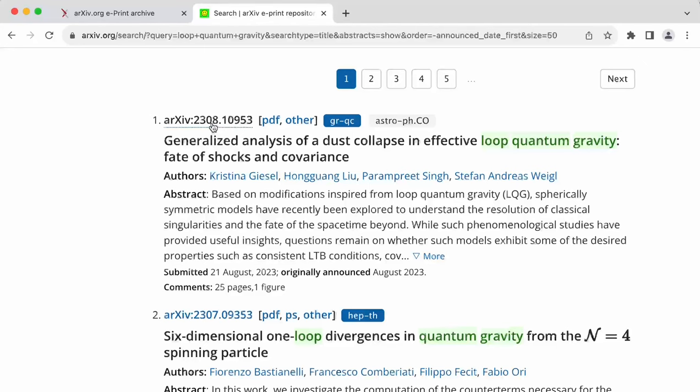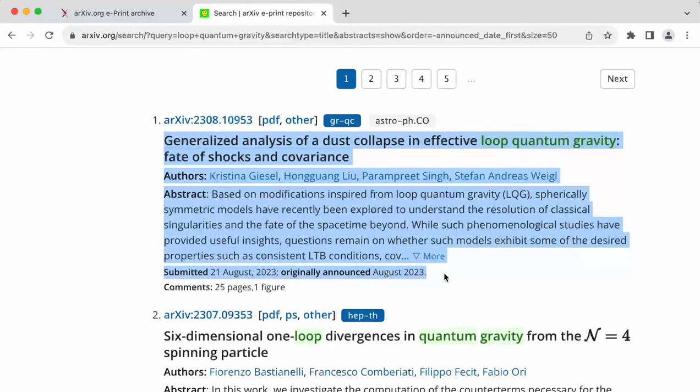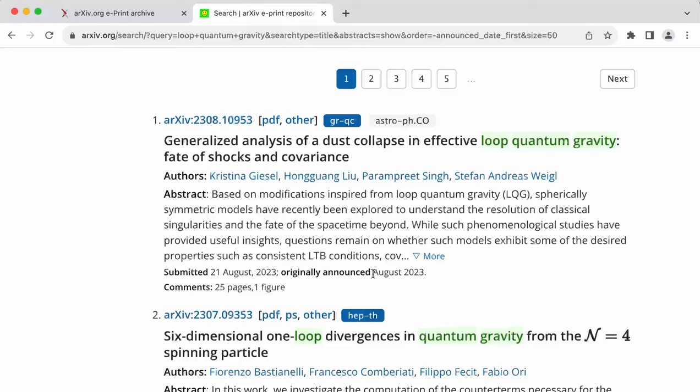which is 2023, and the second two digits, the third and fourth digits refer to the month in which this preprint was posted. So in this case, this paper here was posted in August 2023. That's what the first four digits tell you.